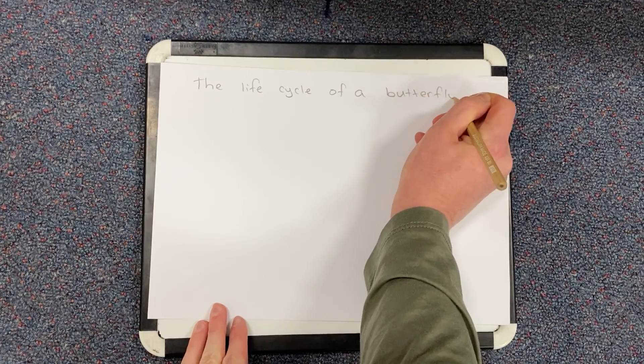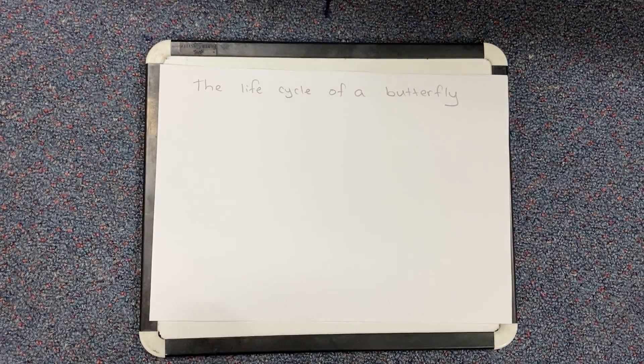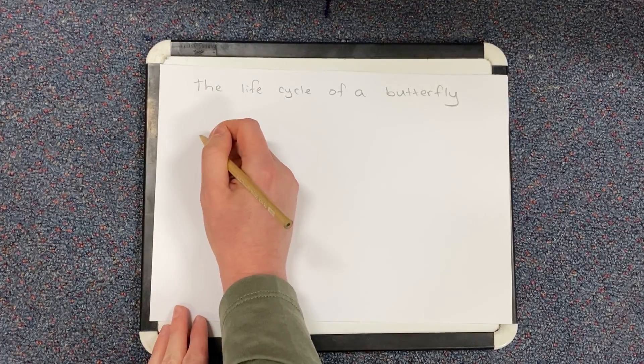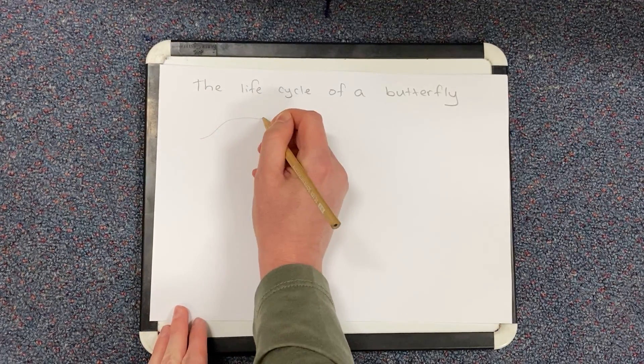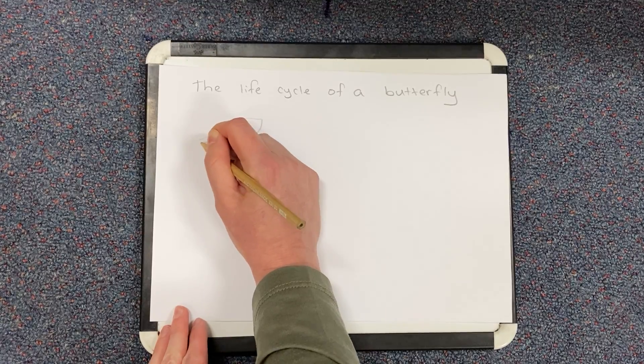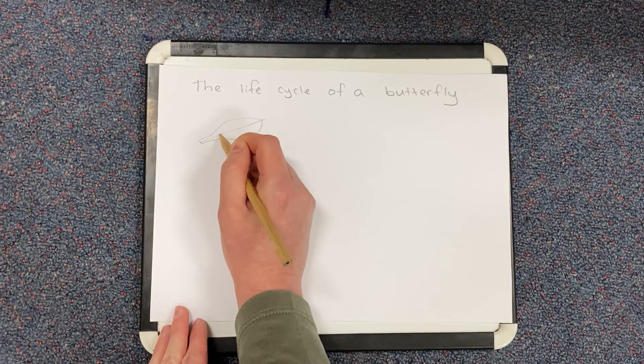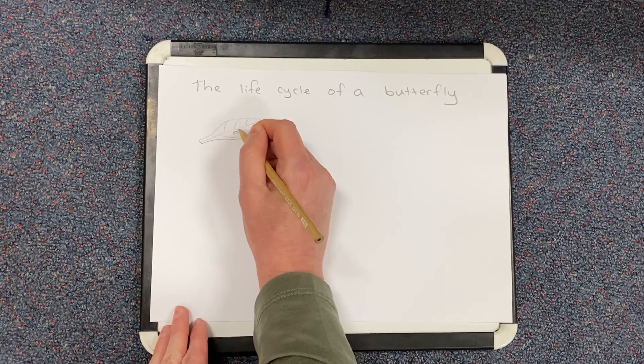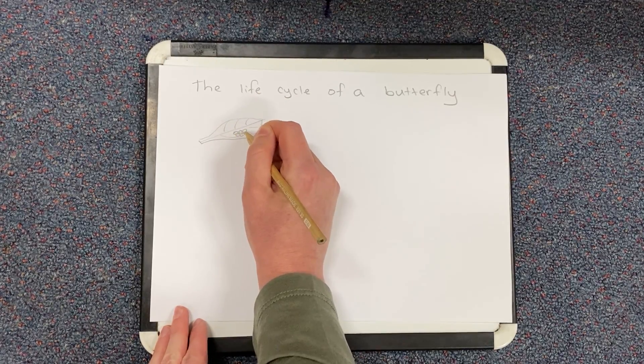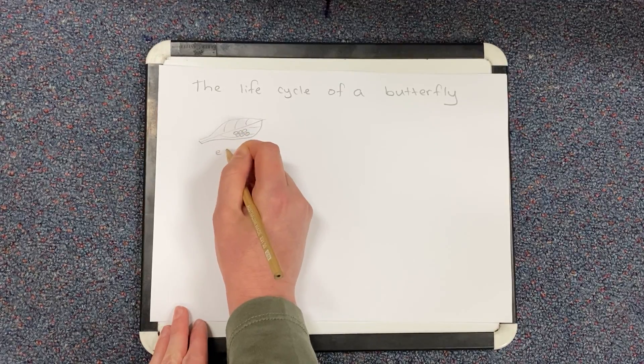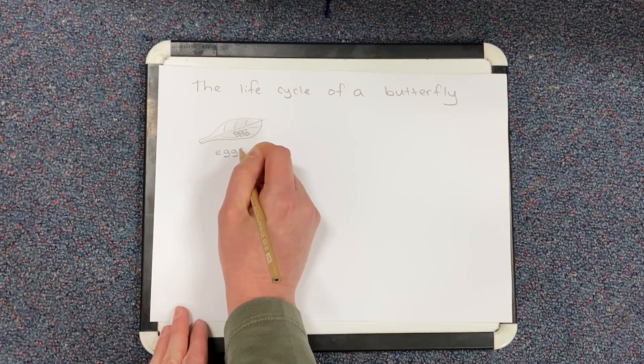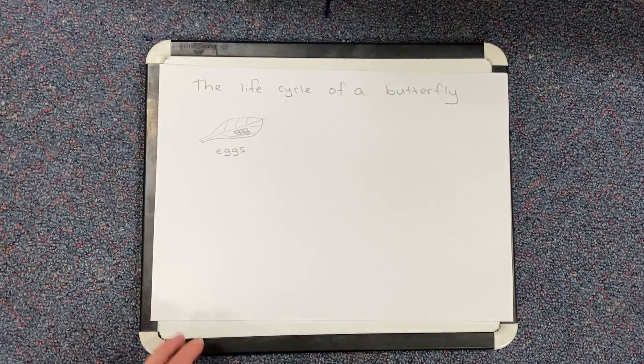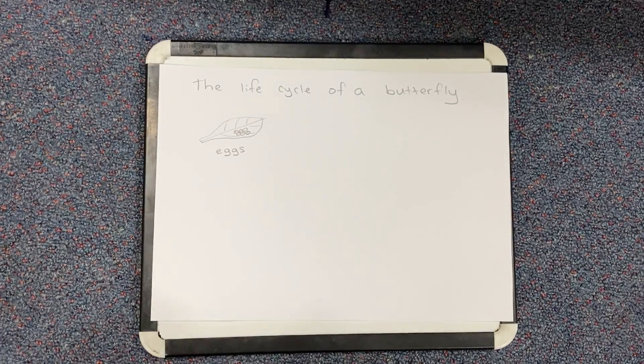Then you need to draw your first picture. So my first picture is going to be of some eggs. So my eggs are going to be on a big leaf. Here's my leaf. And then we have the little eggs on the leaf. And make sure when you're drawing your diagram that you're annotating it. So you're writing what your picture is of. So mine is of the eggs.